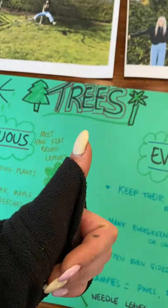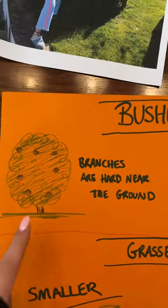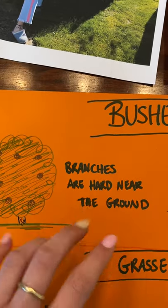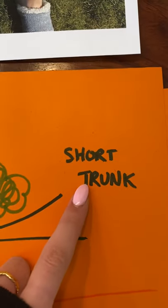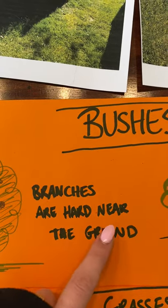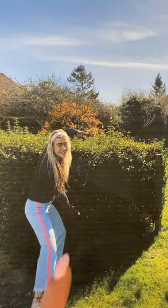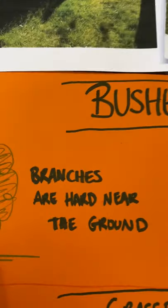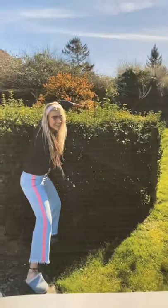That's all for trees. Now let's talk about bushes. B-U-S-H-E-S. Now bushes have branches — remember, these are arms — that are hard and near the ground, because bushes are very low to the ground. They also have a short trunk. So they have branches that are hard and near the ground, and a short trunk, like this. Here is an example of a bush in my garden. As you can see, they're very low to the ground, and they have branches that are also very low to the ground.